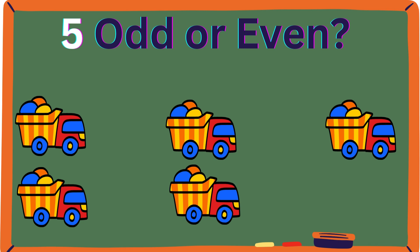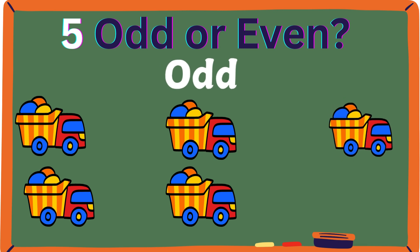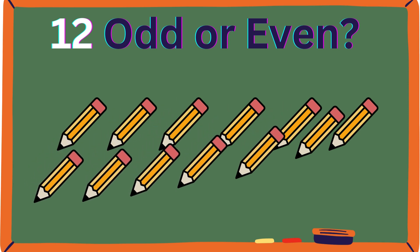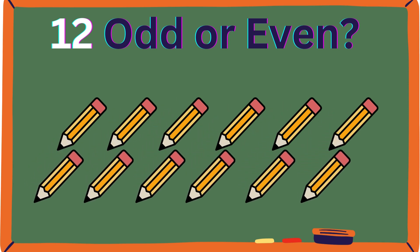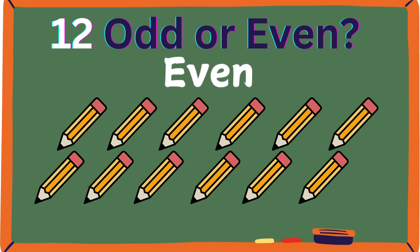Five — odd or even? Odd is correct. Five can make two pairs of two, but one dump truck is left over. Twelve — odd or even? Twelve is even. Twelve can make six pairs of two.